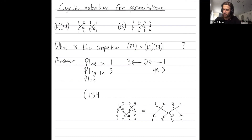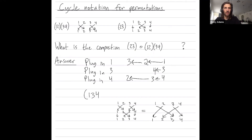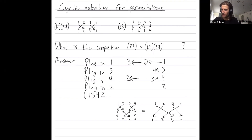Next we plug in four. This first transposition swaps four and three, so four gets mapped to three. The next transposition doesn't affect three, and the next transposition sends three to two. So in total, four got mapped to two. Now I already know two will get sent back to one, but let's double-check: plugging in two, (3 4) doesn't change two, then (1 2) sends two to one, and (2 3) doesn't move one. So two does get mapped to one.